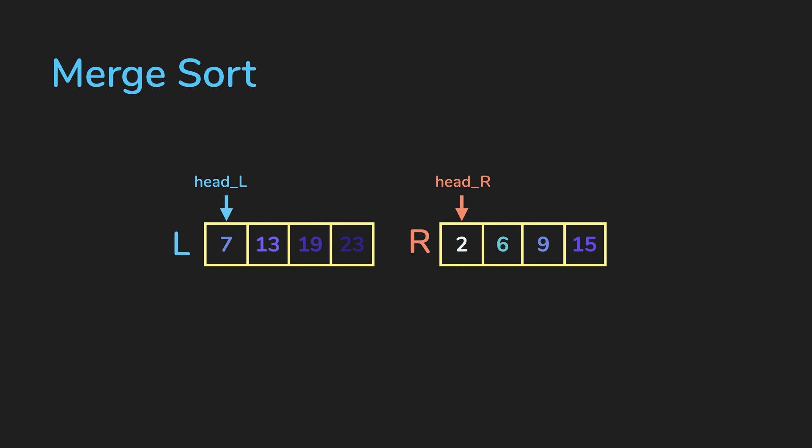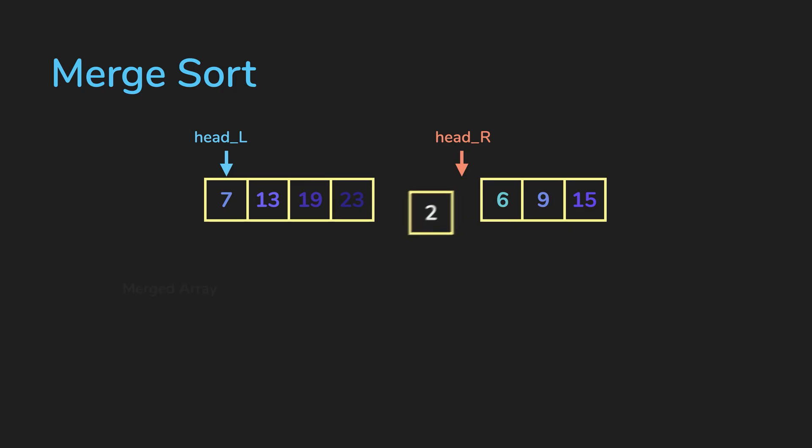The head of L is 7, and the head of R is 2. Since the head of R is smaller, we'll take 2 and insert it into our merged array. Now we move the head of R onto the next element. Now we do that again.